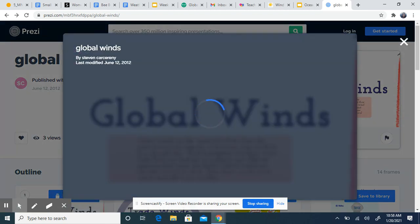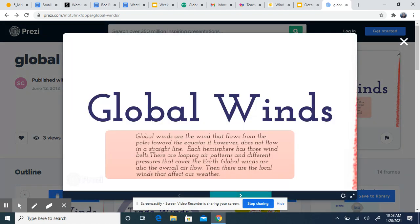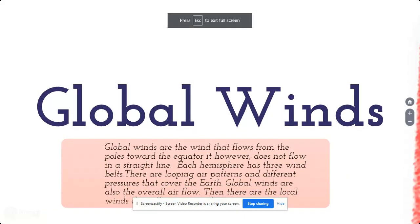Today we're going to be talking about the different types of global winds, which goes along with weather because these global winds affect and impact our weather. Global winds are winds that flow from the poles towards the equator. They do not flow in a straight line — each hemisphere has three wind belts. There are looping air patterns and different pressures, and global winds are also the overall airflow that affects your local weather.